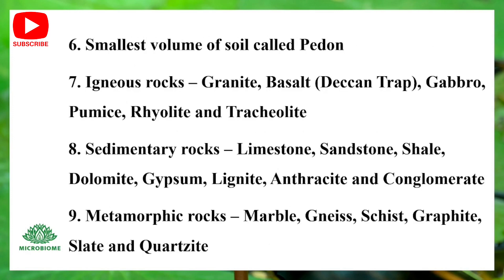The smallest volume of soil is called a Pedon. Igneous rocks include Granite, Basalt, Deccan Trap, Gabbro, Pumice, Rhyolite, and Trachyte.